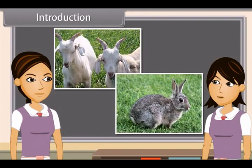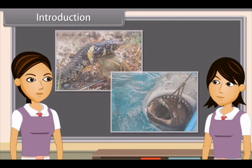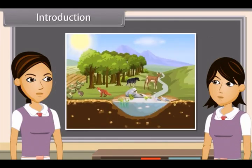Many animals eat only plants like grasses and leaves of plants, while some of them eat other animals. The big fish eat small fish, the birds eat worms and insects, snakes eat frogs, and some insects eat dead bodies of animals. But when we observe it closely, we find that all living things on earth actually depend on the sun for their food, directly or indirectly.